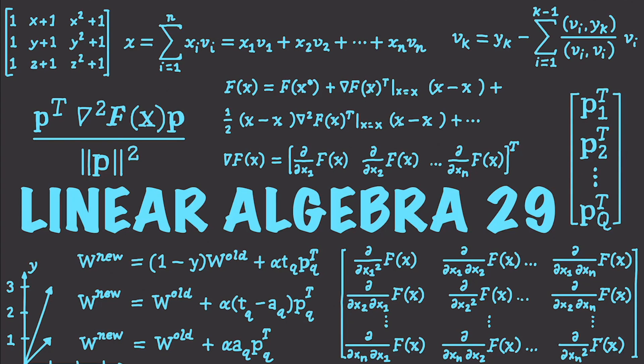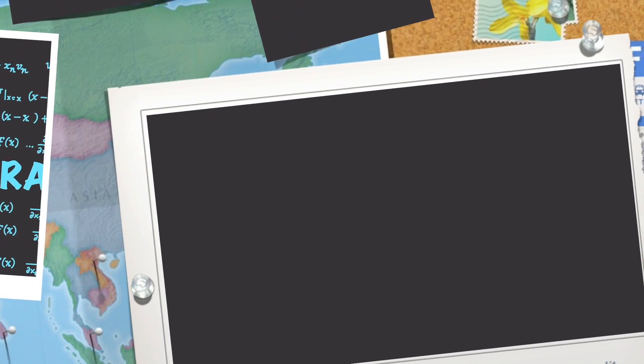Hello, Internet, and welcome to part 29 of my linear algebra tutorial. This is the final part. Everything you will see in regards to linear algebra from now forward will be specific to machine learning. I wanted to finish off this tutorial series by covering something rather complicated: how to find eigenvalues as well as eigenvectors with 3D matrices. I have a lot to do, so let's get into it.